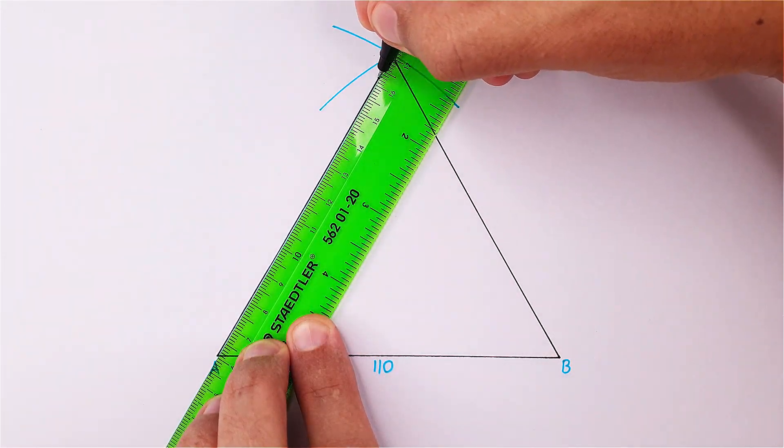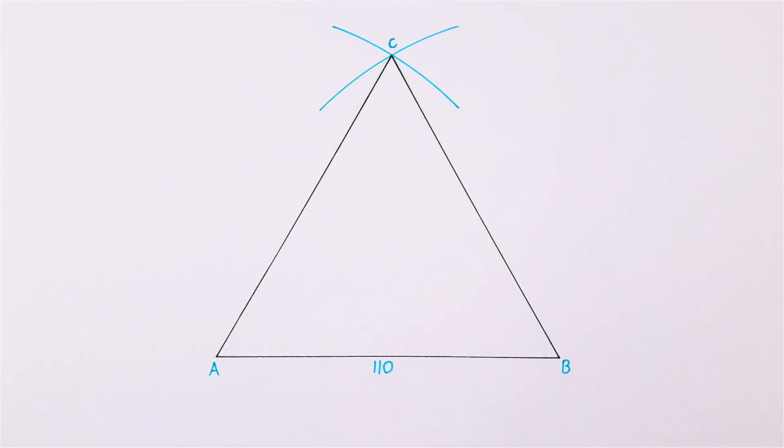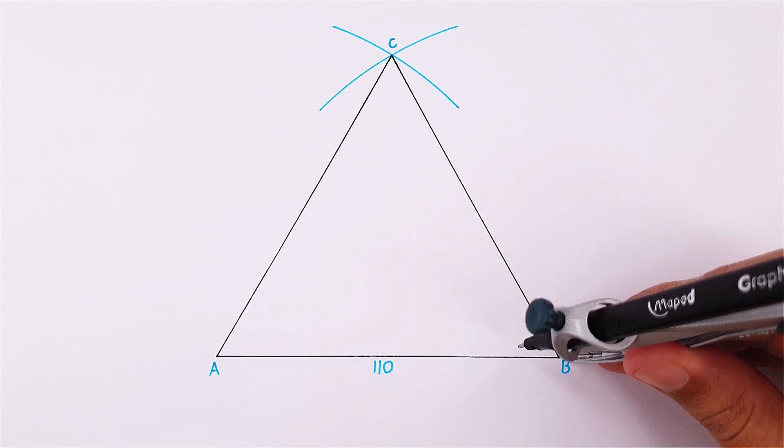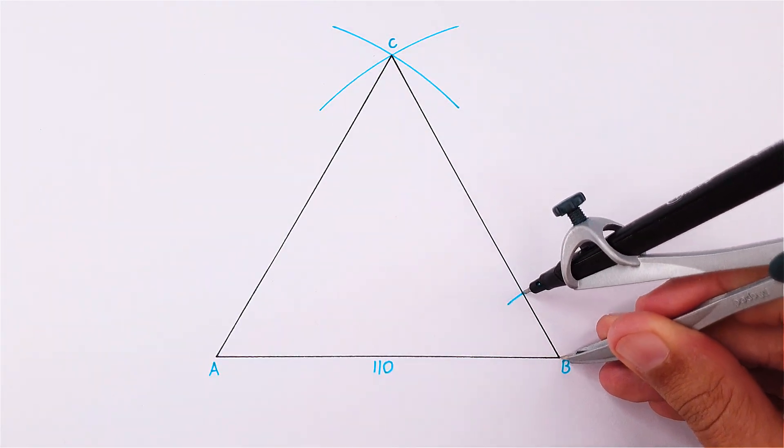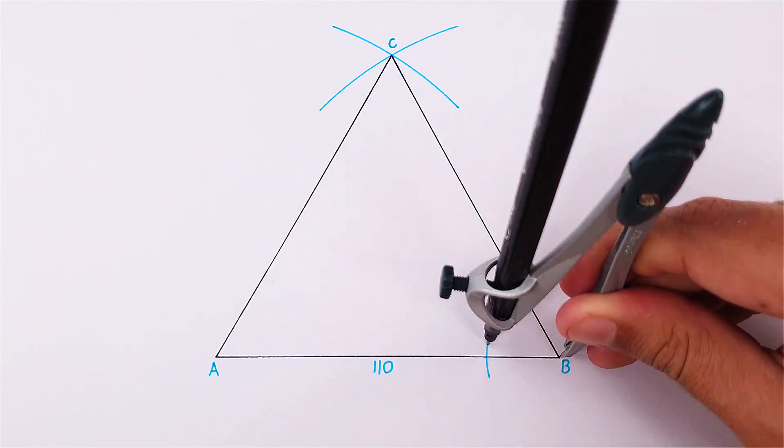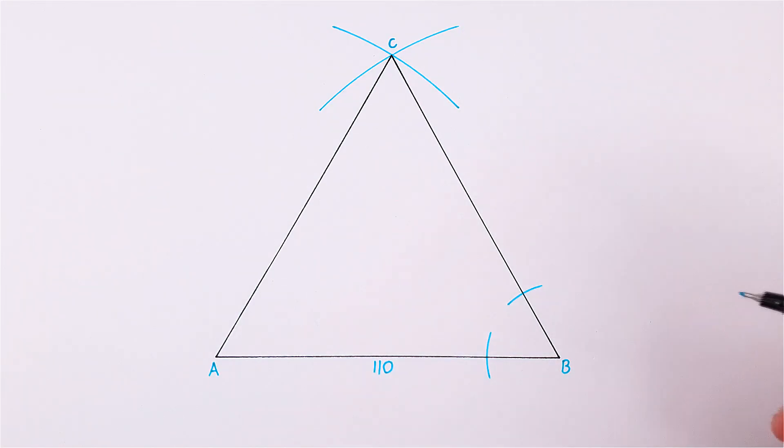Next, construct two angle bisectors. Start with angle B. Place your compass on point B, adjust it slightly and draw arcs to cut through AB and BC. Label the intersections as point 1 and 2.